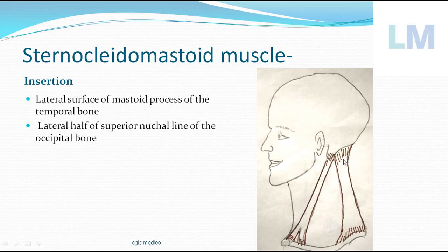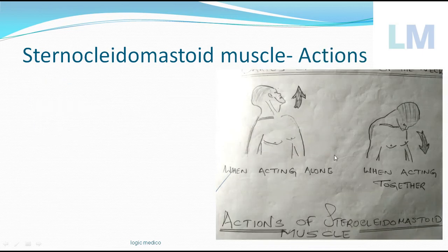The medial half of the superior nuchal line is occupied by the trapezius — a muscle of the back of the neck and thorax. So the sternocleidomastoid inserts into the lateral half, while trapezius takes the medial half of the superior nuchal line.